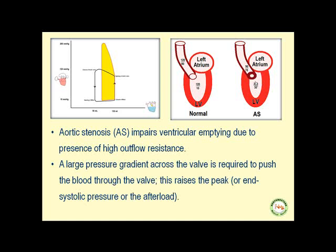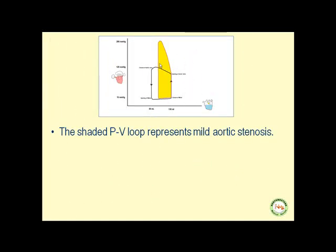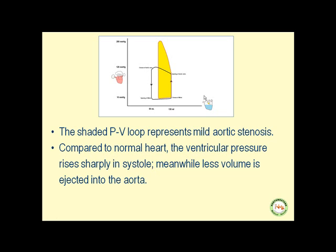Compare this to aortic stenosis: you have a very high pressure within the left ventricle compared with a low systolic pressure of 90 within the aorta. So in order to pass blood through that stenotic valve, we need to generate a very high pressure gradient. The shaded PV loop represents mild aortic stenosis. Compared to the normal heart, the ventricular pressure rises sharply in systole, and meanwhile less volume is ejected into the aorta.